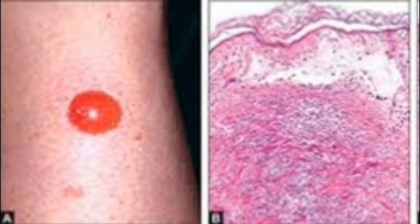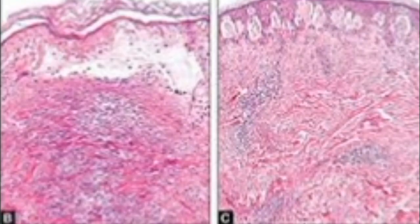The dermis underneath the bulla displays an inflammatory infiltrate similar to that described inside the blister. Occasionally in old lesions there is re-epithelialization of the base of the bulla, which starts in pre-existing hair follicles or from the adjacent normal epidermis, and the bulla appears intraepidermal. However, the bulla shows a complete epidermis with preservation of the rete ridges.